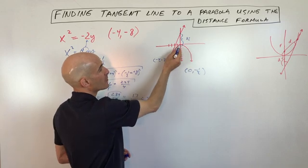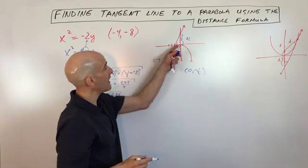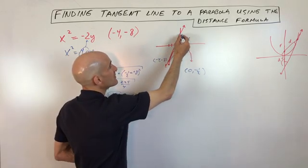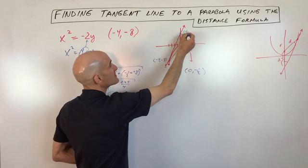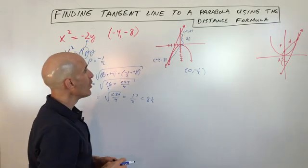And because the focus is over here a half unit below the x-axis, that's going to mean that this y-intercept here is going to be at 0 comma 8.